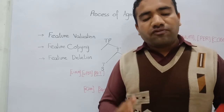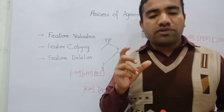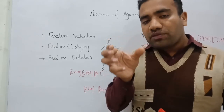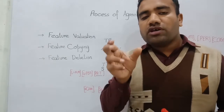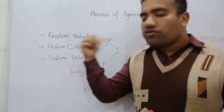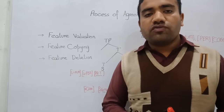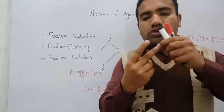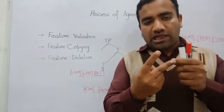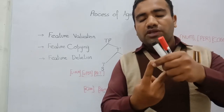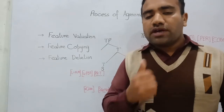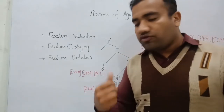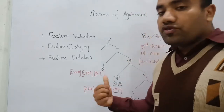The unvalued feature within 'they' is the gender feature, which has not yet been valued at this point. This is the first process — feature valuation — where we have two types of features: valued features and unvalued features. In a diagram, we can present these features systematically.